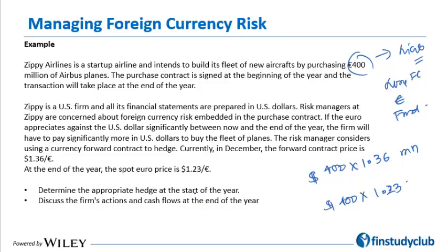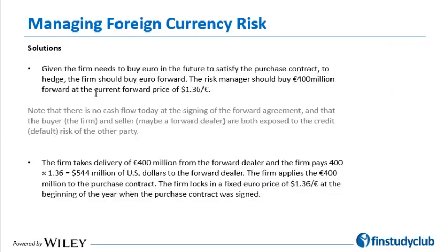To determine the proper hedge: Zippy goes long 400 million euro on a forward basis. Given the firm's need to buy euro in the future to satisfy the purchase contract, the risk manager should buy 400 million euro forward at the forward price of 1.36 dollar per euro. There is no cash flow today in a forward contract — you agree on a price and the exchange of consideration takes place on the agreed settlement date.